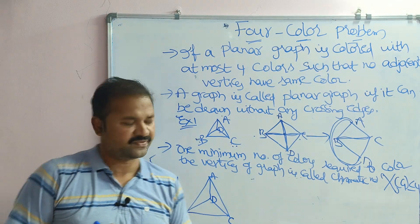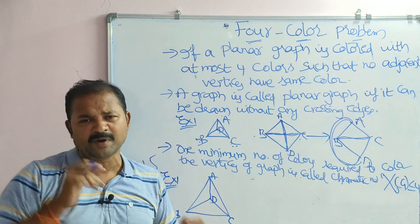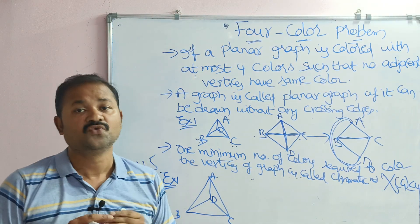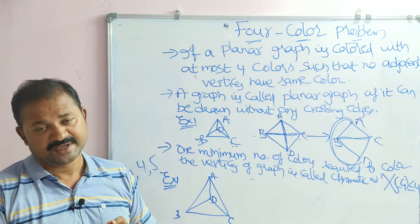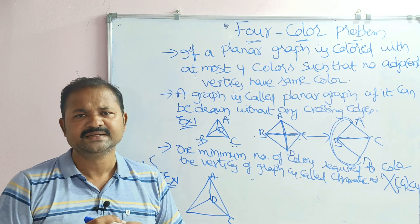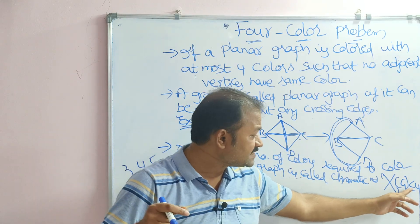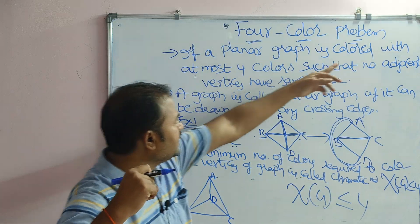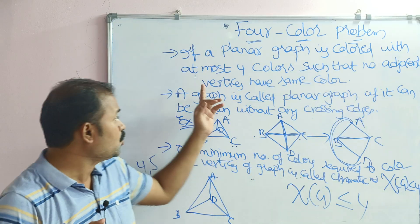Now, for the four color problem, the graph must be a planar graph — if it is non-planar, it does not qualify. The planar graph must be colored with at most four colors, meaning a maximum of four. Therefore, the chromatic number of a four color problem graph satisfies χ(G) ≤ 4.